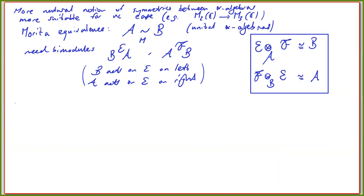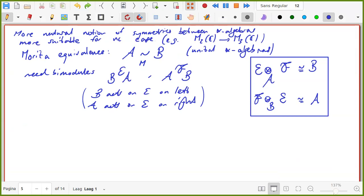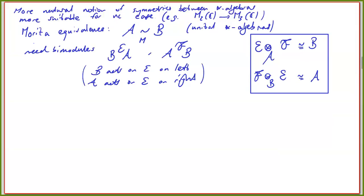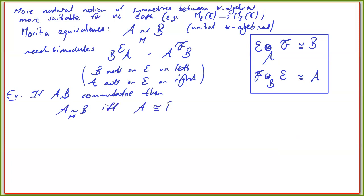Some examples: if A and B are commutative, then A is Morita equivalent to B if and only if A is star isomorphic to B. So we haven't lost anything in passing to the non-commutative world by taking Morita equivalence as the more natural notion of equivalence.